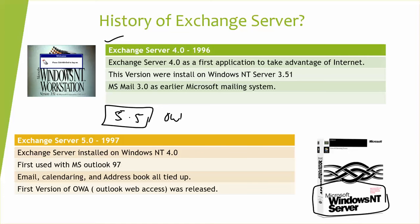These days we have Outlook 2016, which has many features and functions that work automatically. But at that time it was MS Outlook 97, so you had to configure your Exchange 5.0 with Microsoft Outlook 97. In future lessons we are going to learn how to configure Outlook, which is the client you install on your customer's machine so they can access Microsoft Exchange to send and receive emails.